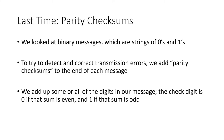Last time we talked about binary messages, which are strings of zeros and ones, and we wanted to try to detect and maybe even correct errors in transmissions. To do that, we added something called a parity checksum to the end of each message. A parity checksum is computed by adding up some or all of the digits in our message, and then the check digit is zero if that sum is even, and one if that sum is odd.